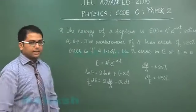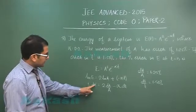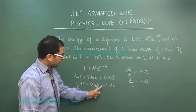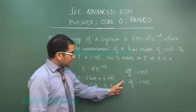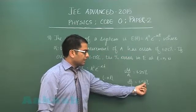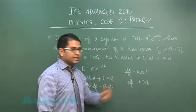Now all I need to do is that I need to calculate the value of dE by E at t equals to 5. So dA by A is given, α is given, and dt can be calculated at t equals to 5. If I plug t as 5, I will get the value of dt at t equals to 5.